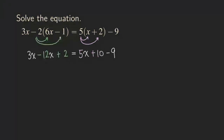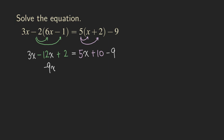When all the parentheses are removed, the next step is to see if there are like terms that we can combine on each side. We see that there are the 3x and the negative 12x terms, so we can combine them. On the right-hand side, we have the constant term 10 and the other constant term negative 9, so we can combine them as well. So 3x minus 12x gives us negative 9x. We bring down the plus 2, and we don't do anything to the 5x. Then we have 10 minus 9, so that's positive 1.